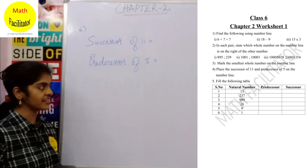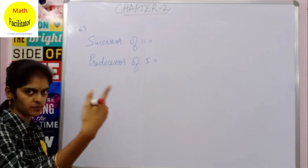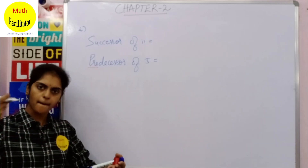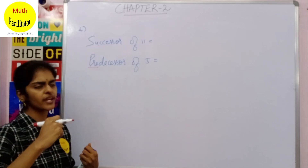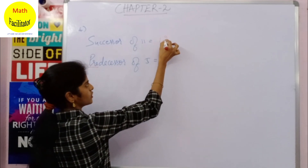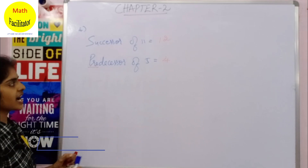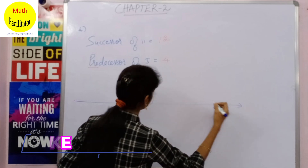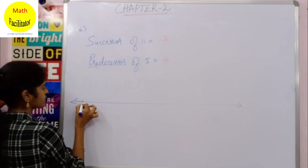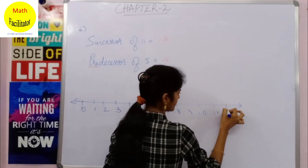Next, you have to place the successor of 11 and the predecessor of 5 on the number line. Successor is the next number — the number that comes after. Predecessor is the number that comes before. So the successor of 11 is 12, and the predecessor of 5 is 4. Now let us mark 4 and 12 on the number line: 0, 1, 2, 3, 4, 5, 6, 7, 8, 9, 10, 11, 12, 13, and so on.